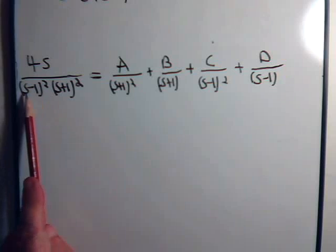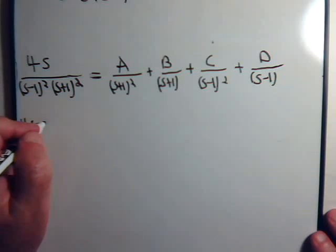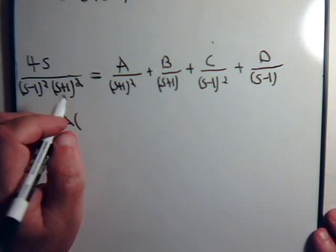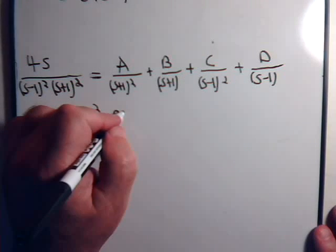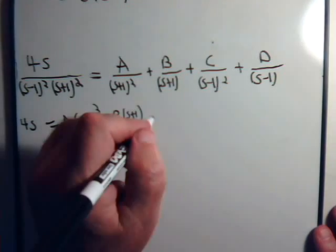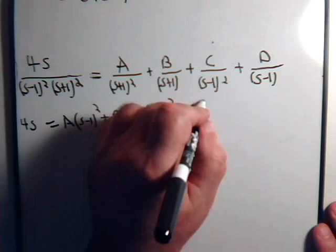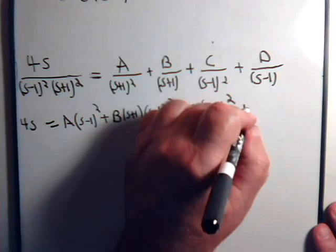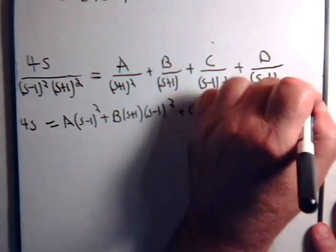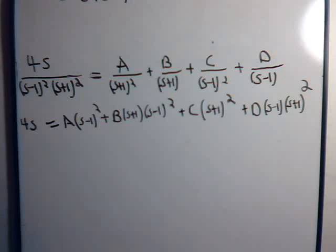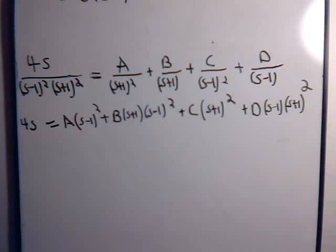Now we multiply both sides of the equation by this denominator. So we have 4s equal to A times s minus one squared, plus B times s plus one times s minus one squared, plus C times s minus one times s plus one squared, plus D times s plus one squared. We have to multiply these out and then collect like terms.